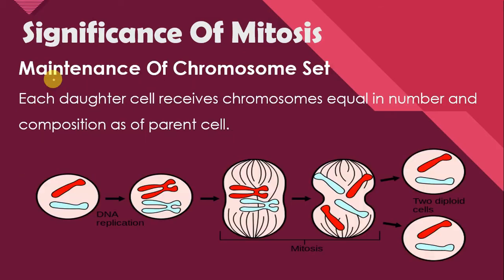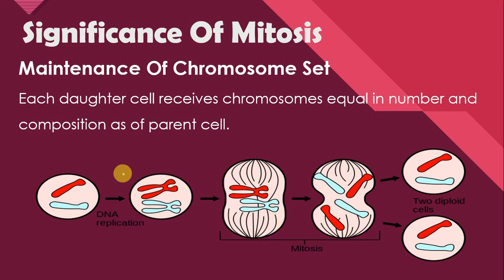Number 1 is the maintenance of chromosome set. Each daughter cell receives chromosomes equal in number and composition as the parent cell. By the process of mitosis, when a parent cell divides into two daughter cells, the number of chromosomes and their composition are the same as in the parent cell.